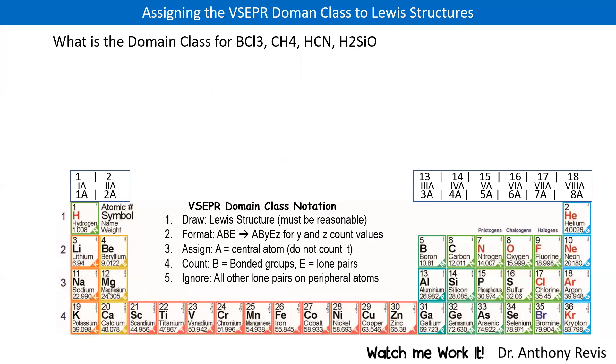So, watch me work it. Let's get going here with BCl3. First, let's draw the Lewis structure BCl3. I happen to know what that one looks like already. It's B with chlorine. That's my version of a chlorine with lots of electrons around the chlorine. Okay?